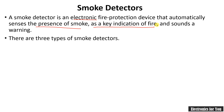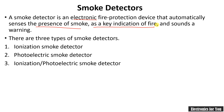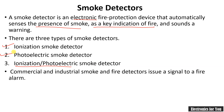There are three types of smoke detectors. The first one is the ionization smoke detector, the second one is the photoelectric smoke detector, and the third is the ionization-photoelectric smoke detector, which is basically a combination of the above two.